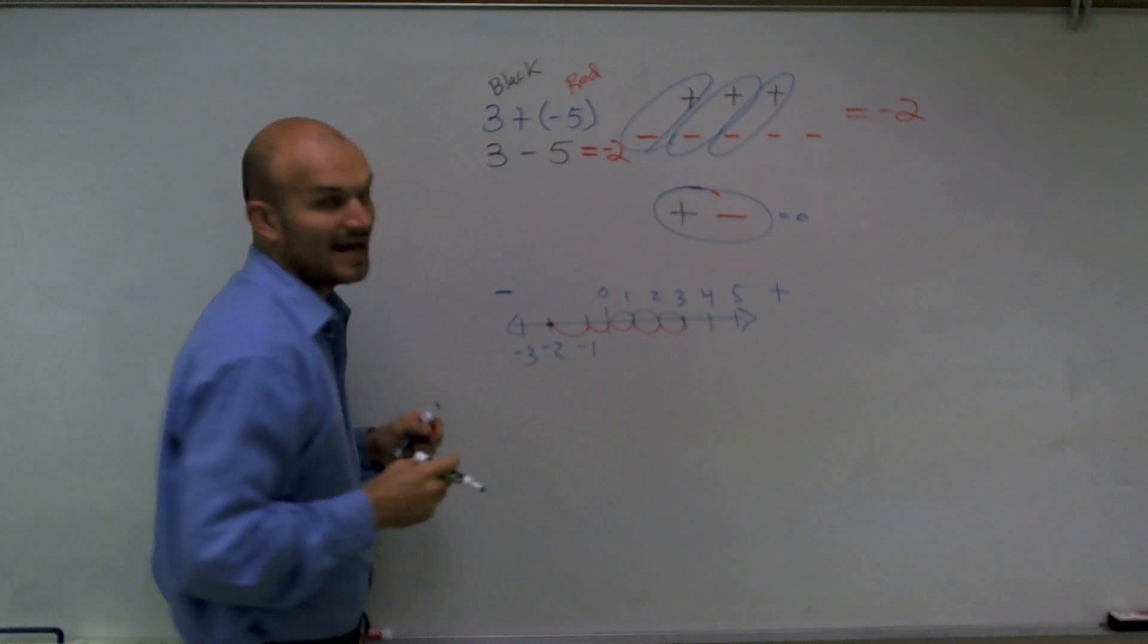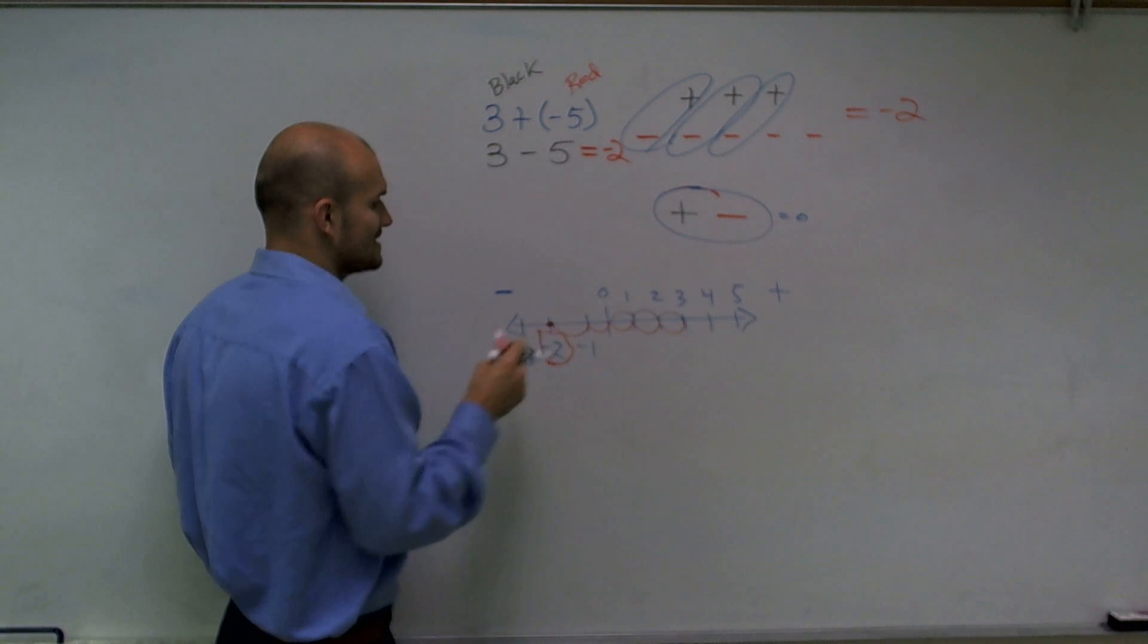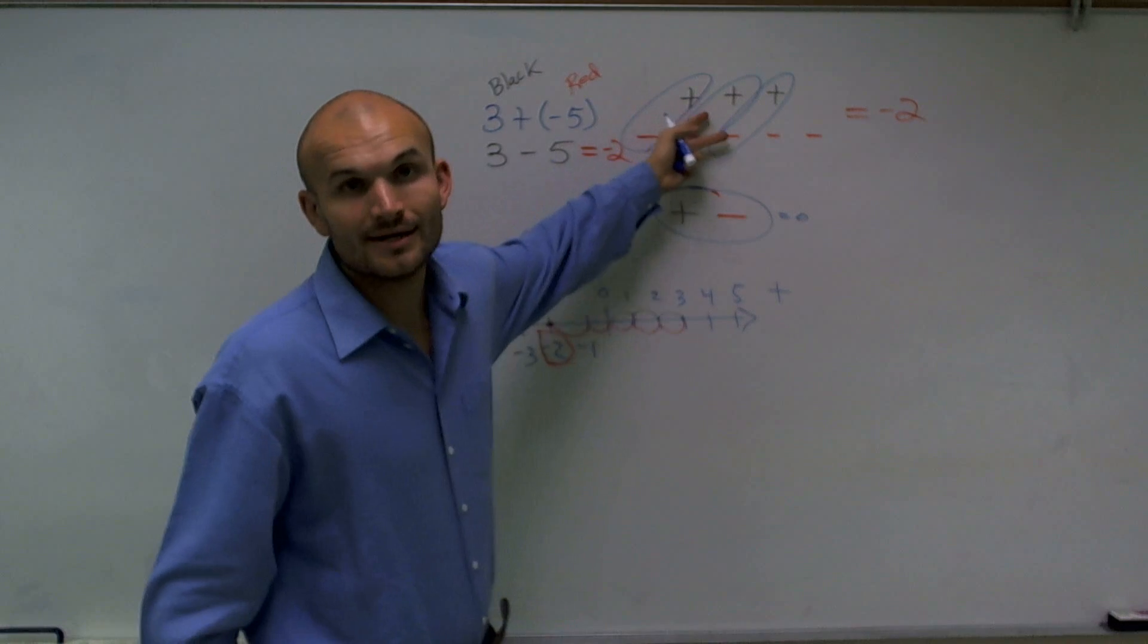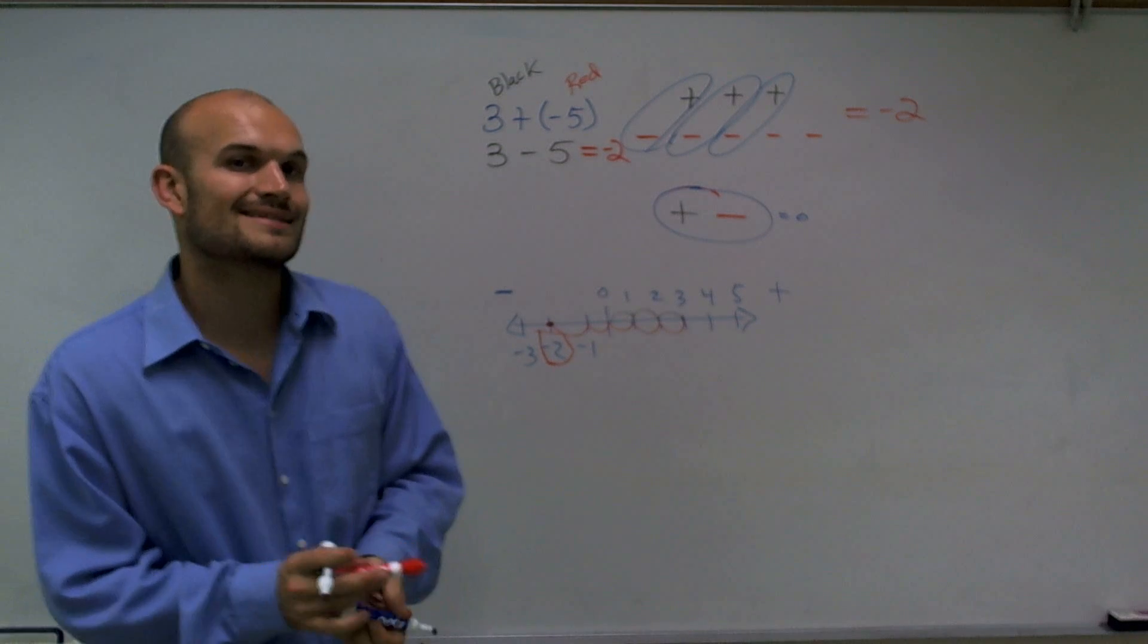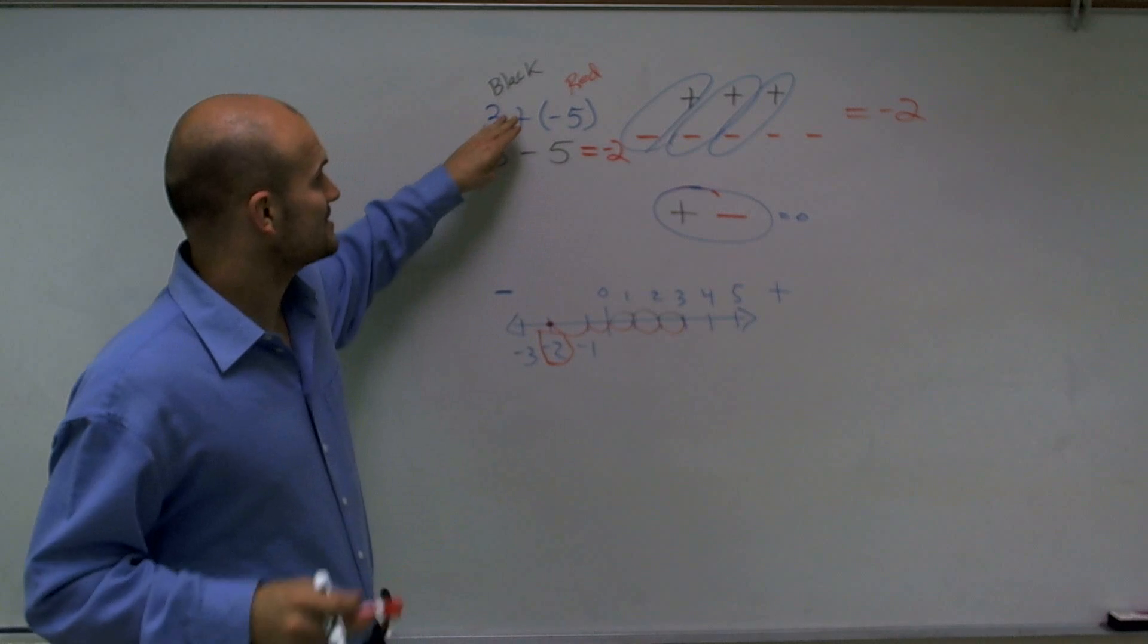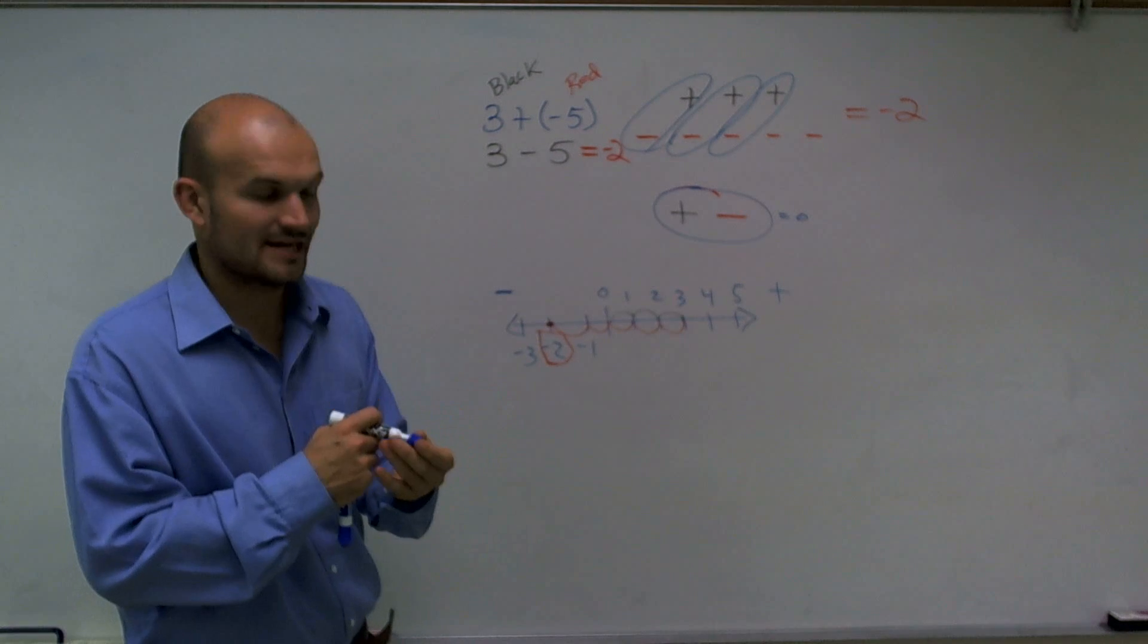And again, if you look, you end up at negative 2. So there, ladies and gentlemen, I gave you one visual representation, two representations, and then also one kind of deal with money that will help you understand that 3 plus a negative 5 is going to give you a negative 2.